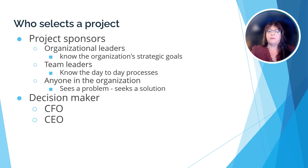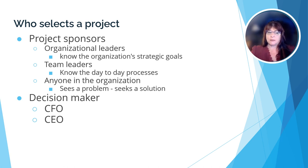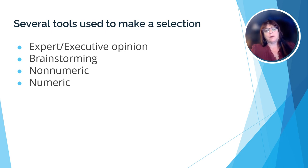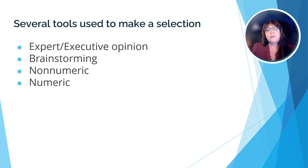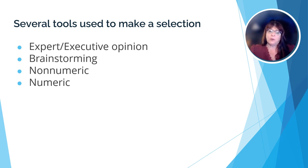That decision is typically going to fall on organizational leaders. For example, the chief financial officer will likely be the one to make a decision about a project to improve the payroll process, or the chief executive officer would make the decision regarding a project that addresses a strategic goal of the organization. Decision makers don't normally make the decision to start a project arbitrarily — they have tools they can use to help them decide which projects have merit and will add value to the company. Let's look at some of those tools.